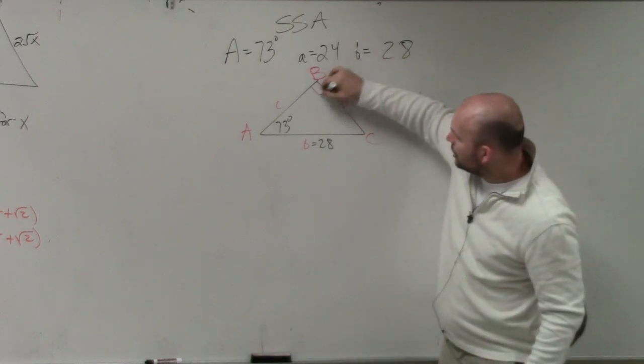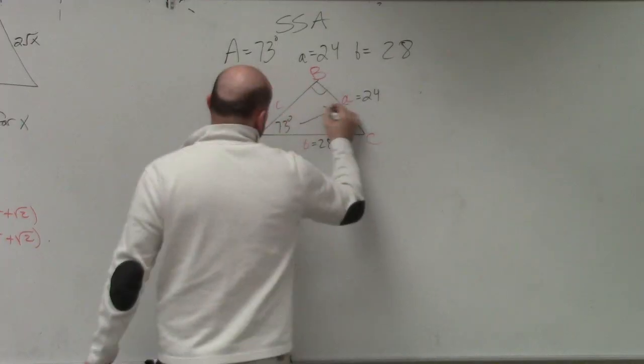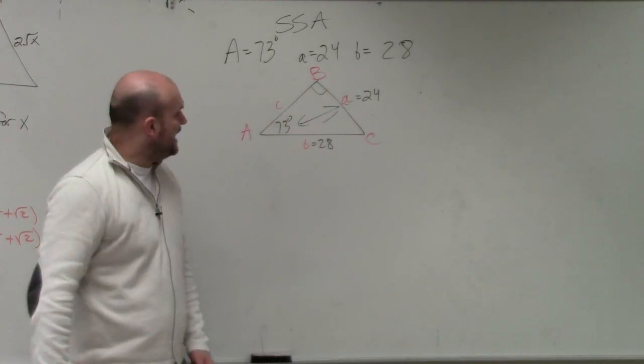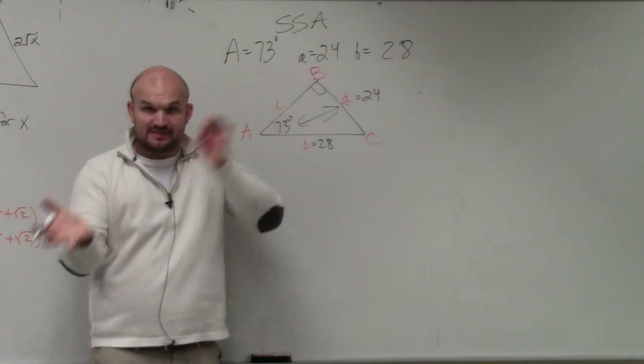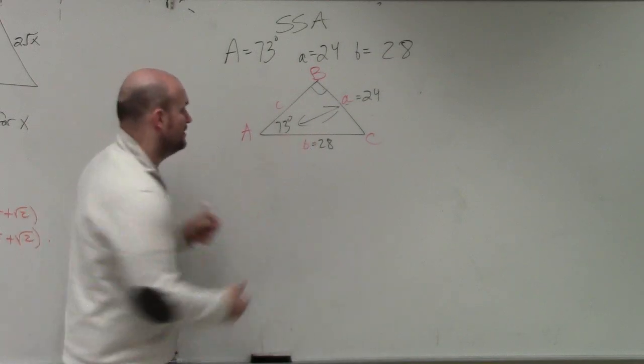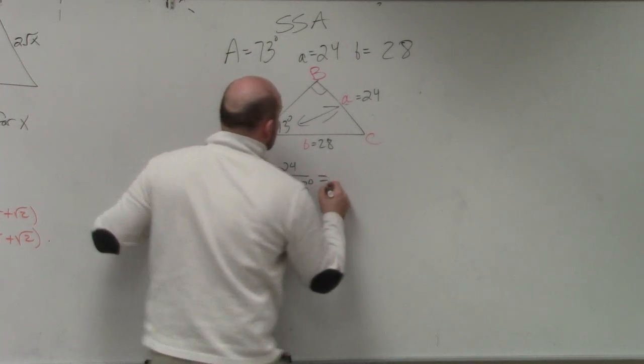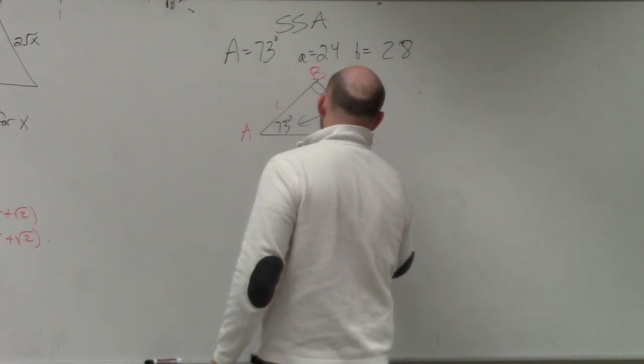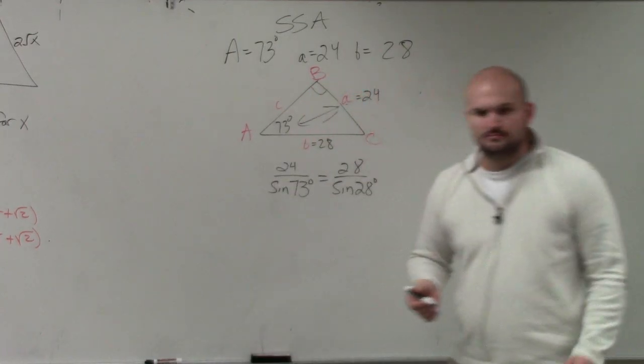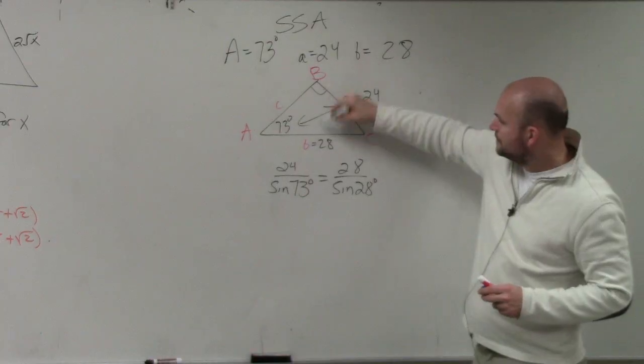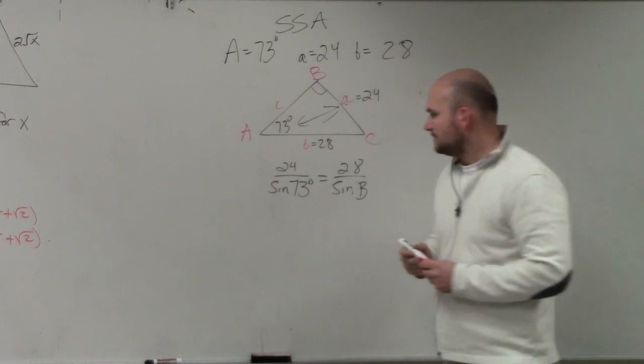So now I know that I can solve for my missing angle B by using the law of sines, because I have a ratio of angle A. So as long as I have a ratio of an opposite side length and its angle, I can do 24 over the sine of 73, and that's going to equal 28 over the sine of B, right?